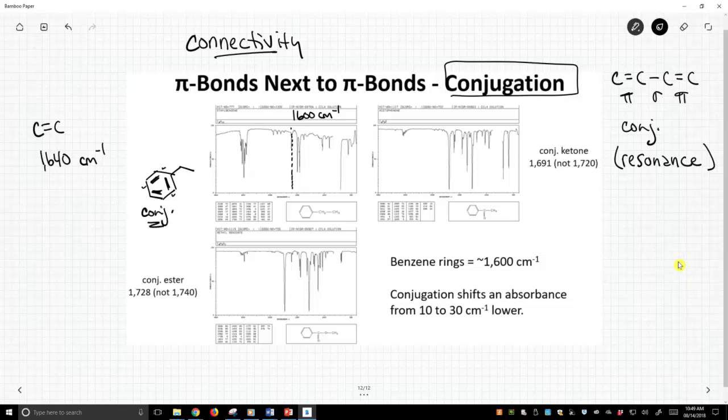The effect of conjugation is to lower the wavenumbers. In this case, it lowered from about 1640 to 1600. Typically, conjugation drops things about 20 wavenumbers. Benzene is a little bit more exaggerated because you have more double bonds in conjugation, so we get a more dramatic effect.